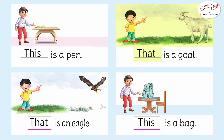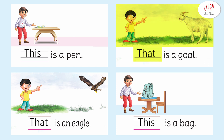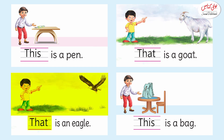The next picture is of a boy. You have to tell me — is the goat close to the boy? No, the goat is far from the boy. So what do we use for far things? 'That.' So in this sentence we will use 'that': 'That is a goat.'